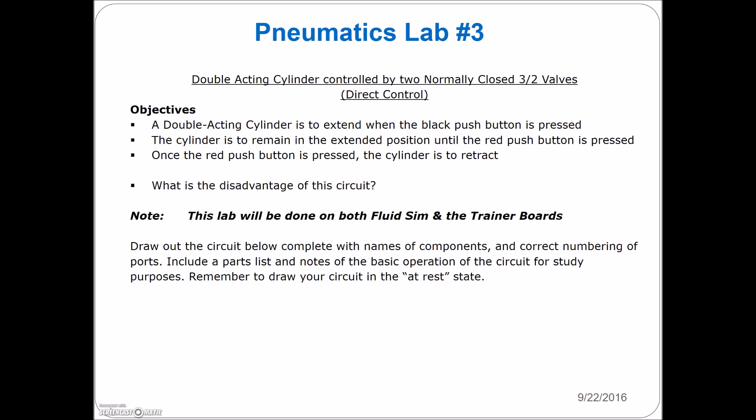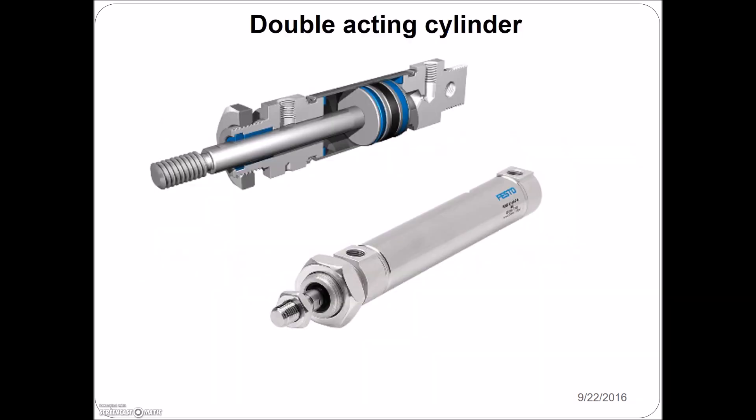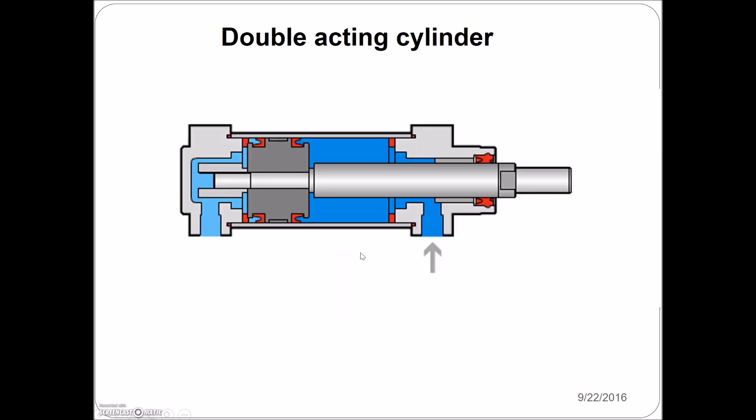Next one is going to make use of a double-acting cylinder. A double-acting cylinder looks like this, where it has one port and a second port. This port at the back is going to allow air to go in and extend that cylinder. When we put air into this port, it's going to push back on this valve and allow that to retract. So extend and retract. It's a double-acting cylinder.